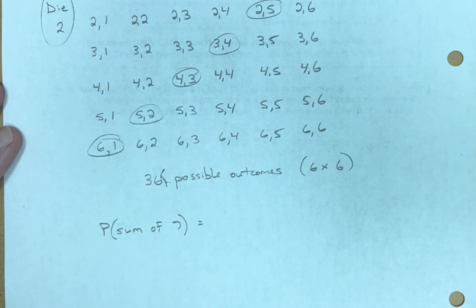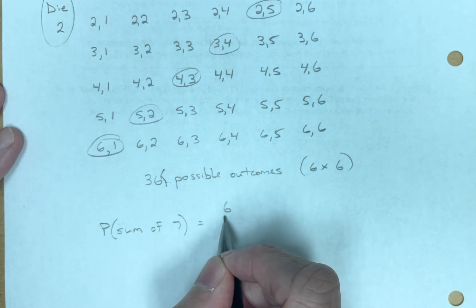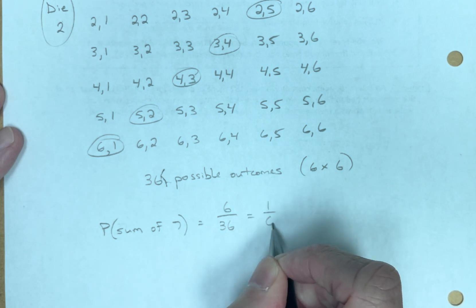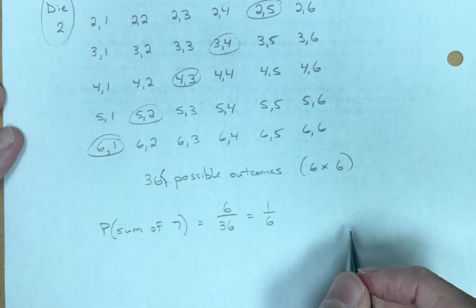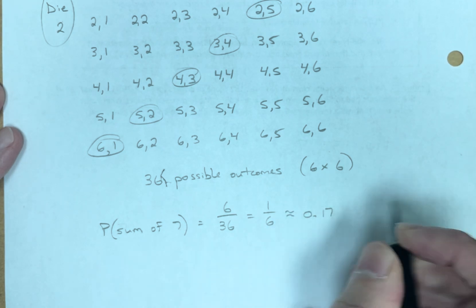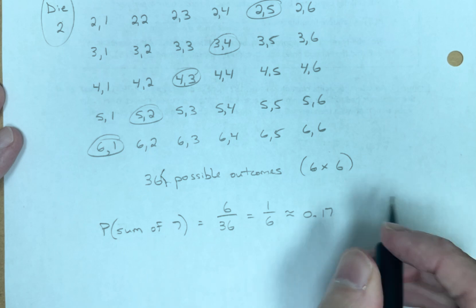So, the number of ways a sum of seven can occur is six. The number of possible outcomes is 36. So the probability of rolling a sum of seven is one over six, which is approximately 0.017. I think it's 0.016 repeating.